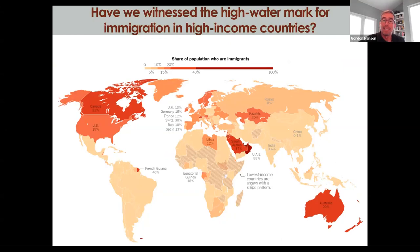Have we witnessed the high watermark for immigration globally? It's useful just to take stock and figure out where exactly we are. In the U.S., about 15% of the population is foreign-born. Canada, 22%. Australia, 29%. The Gulf states — the United Arab Emirates at 88%. And throughout Europe, we're in the low double digits. So we've seen pretty significant increases in immigration over the last 20 years.